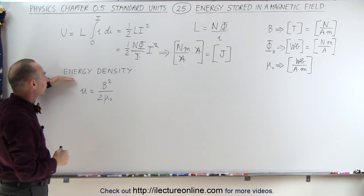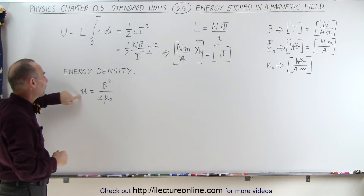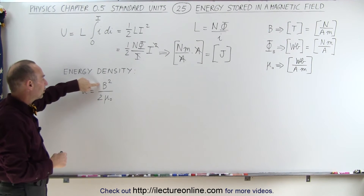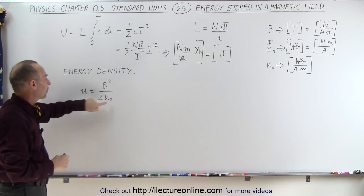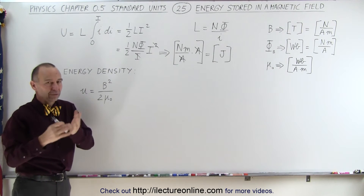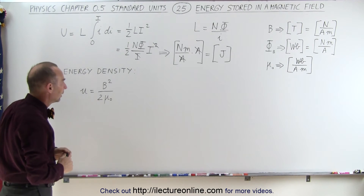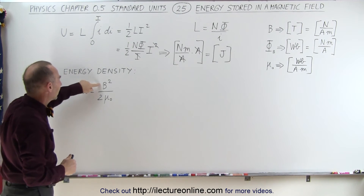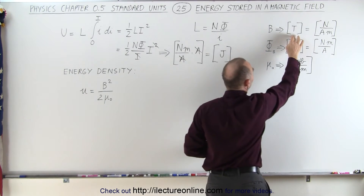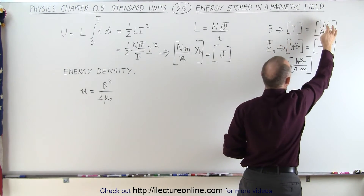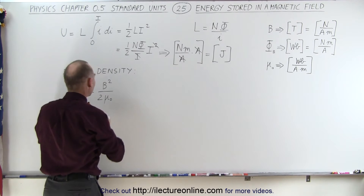How about energy density? Energy density is defined as the magnetic field squared divided by two times the permeability of free space, assuming there is simply air. The magnetic field units are in Teslas, and a Tesla is a Newton per amp·meter. Let's see if this works out.